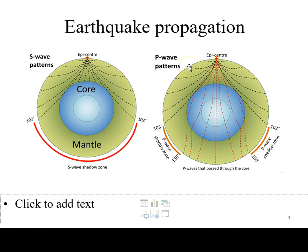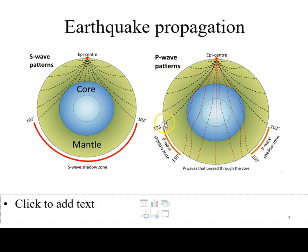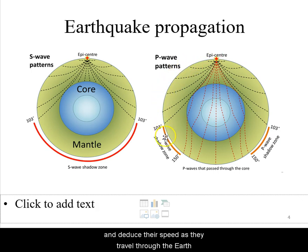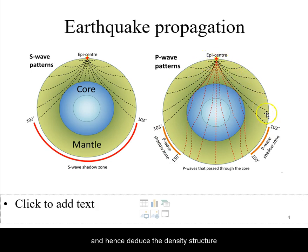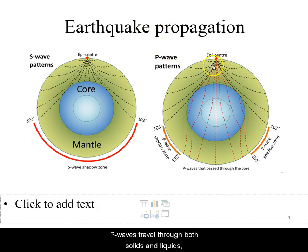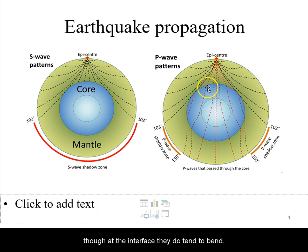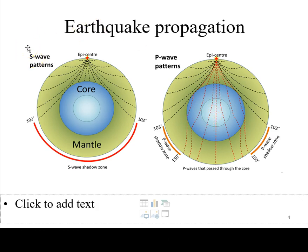By placing sensors, also known as seismometers, all over the planet, we can record the arrival time of these earthquakes and deduce their speed as they travel through the Earth, and hence deduce the density structure. P waves travel through both solids and liquids, although at interfaces they do tend to bend a little bit. S waves, on the other hand, travel through solids but not through liquids.